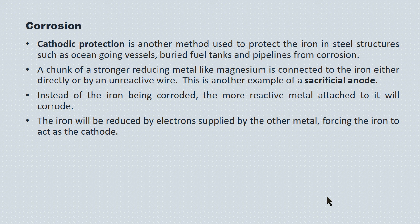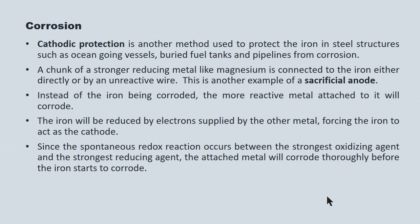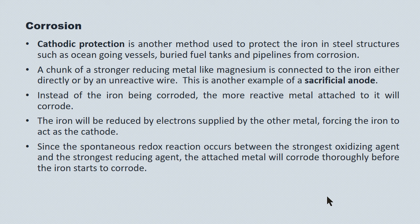The iron can actually oxidize the magnesium or other stronger reducers, forcing the iron to act as a cathode. The spontaneous redox reaction is between the strongest reducing agent and the strongest oxidizing agent, so the magnesium or any other sacrificial metal chosen will be the only metal oxidized until it's completely gone. As often as not, on these massive iron and steel structures, you see them replacing the magnesium or zinc once it's been fully oxidized, since it's lived its useful purpose.